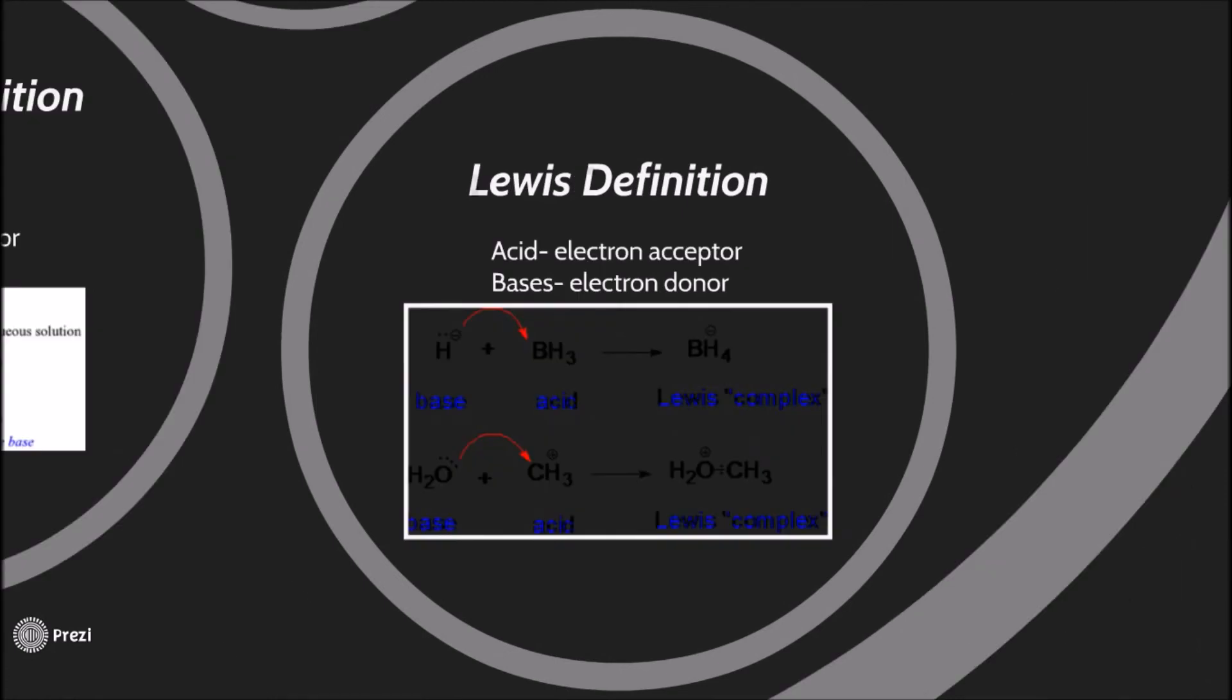The Lewis definition. Acid is an electron acceptor and bases are an electron donor. This definition is basically the exact opposite of the Bronsted definition. In this one, the acids are the acceptors but they are not accepting protons. They are accepting electrons as you can see in the picture below. The base is giving away an electron to the acids.